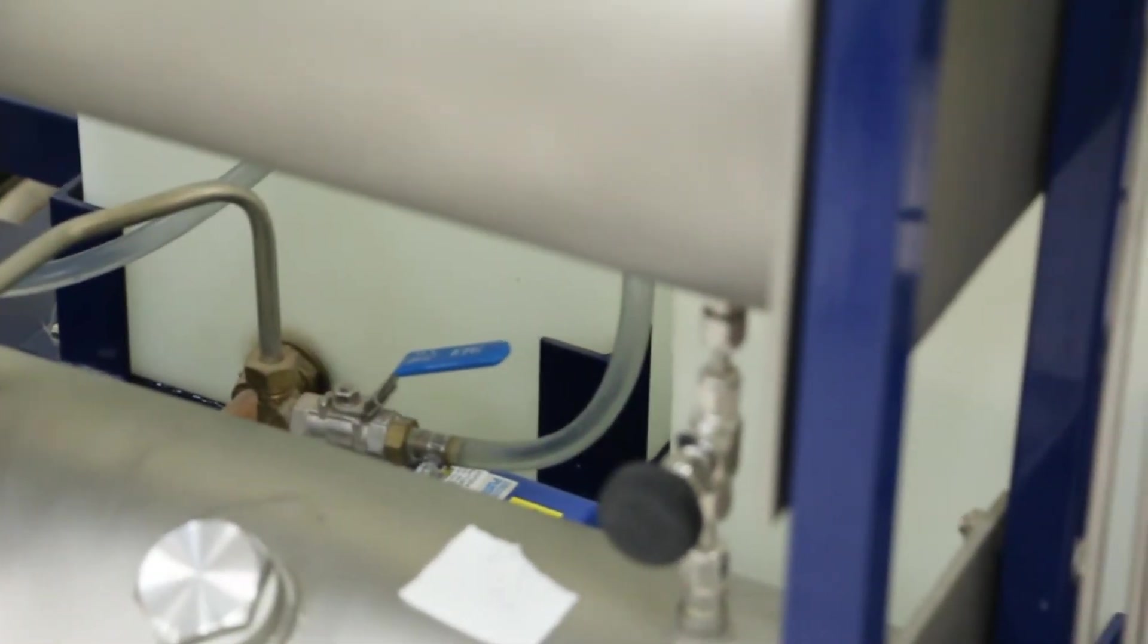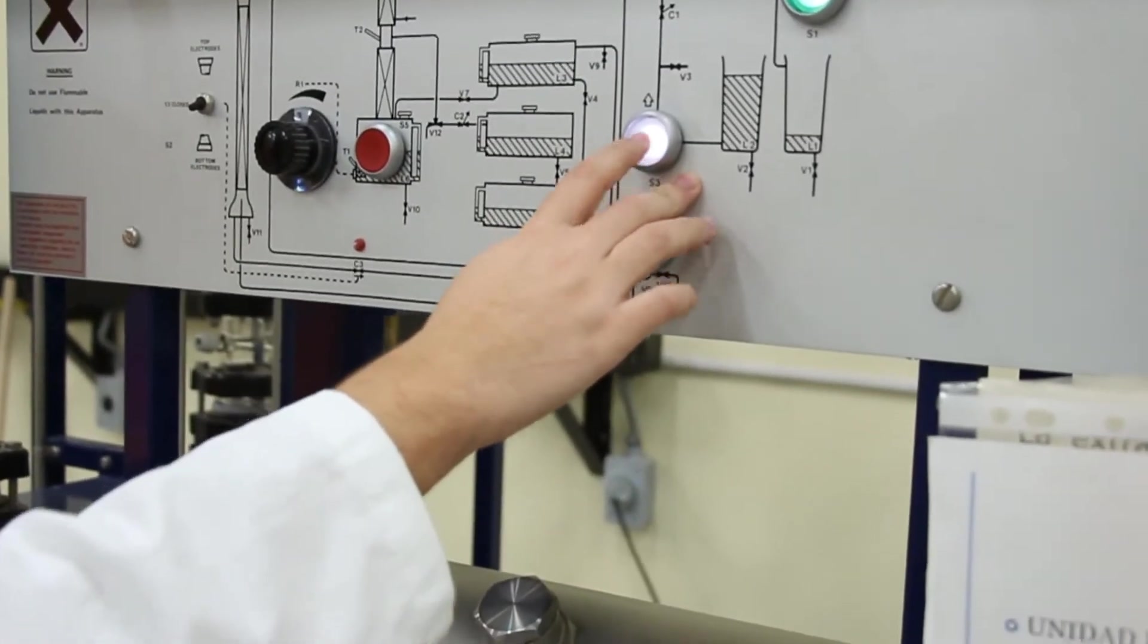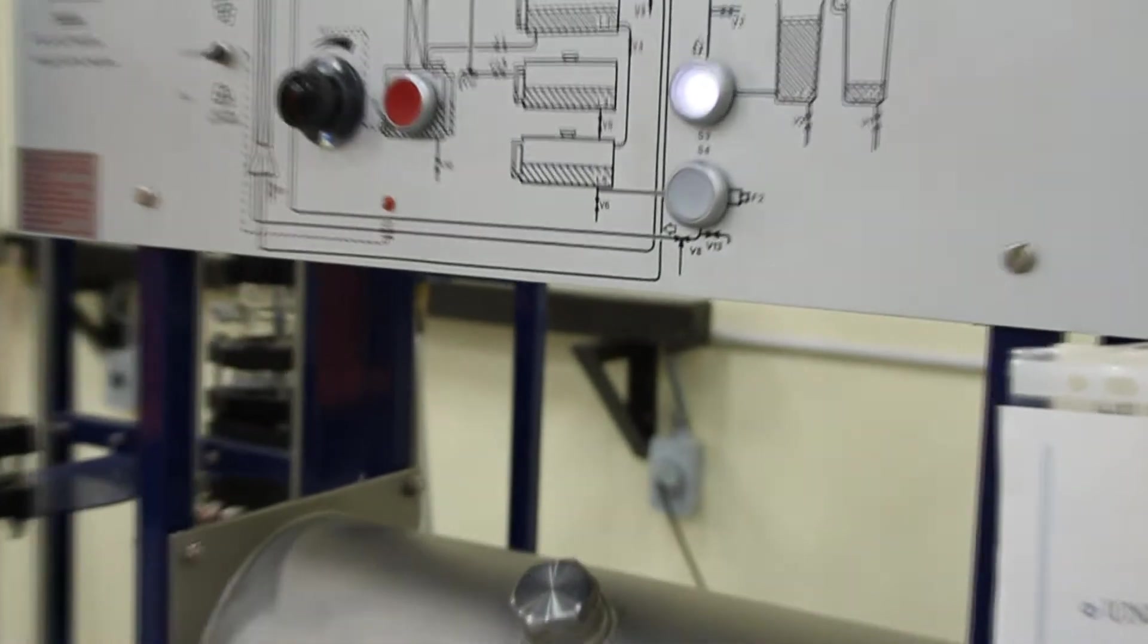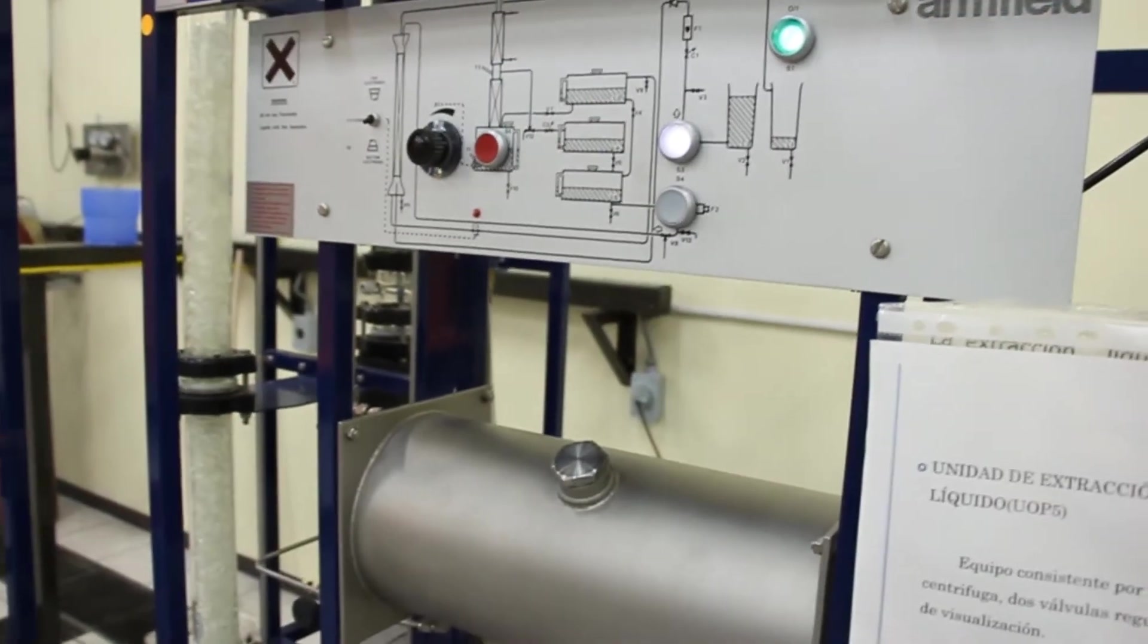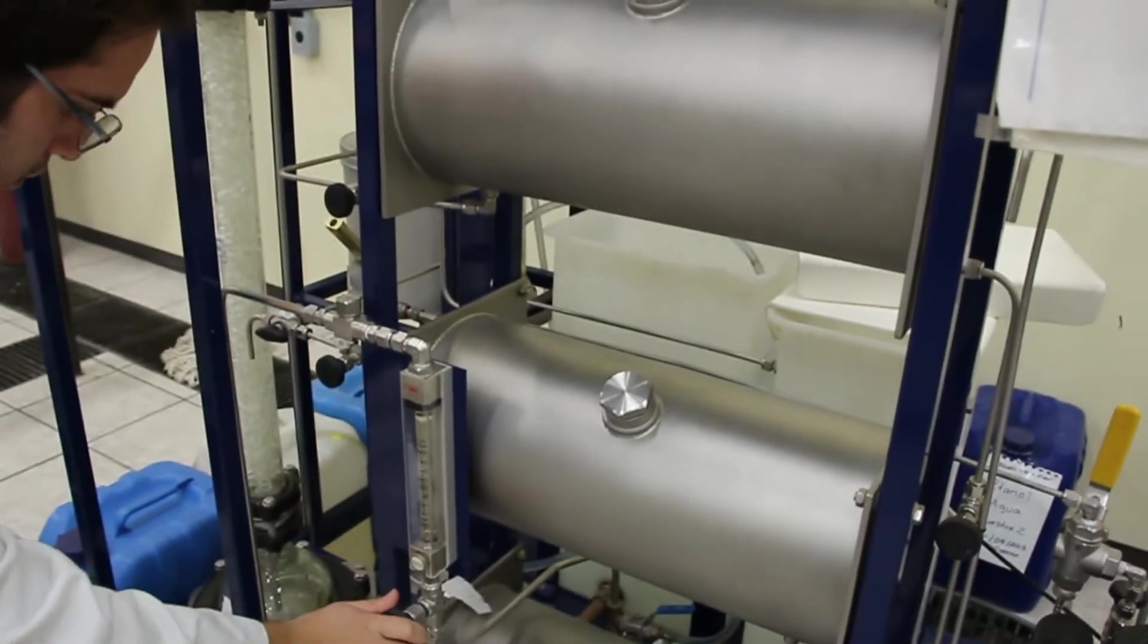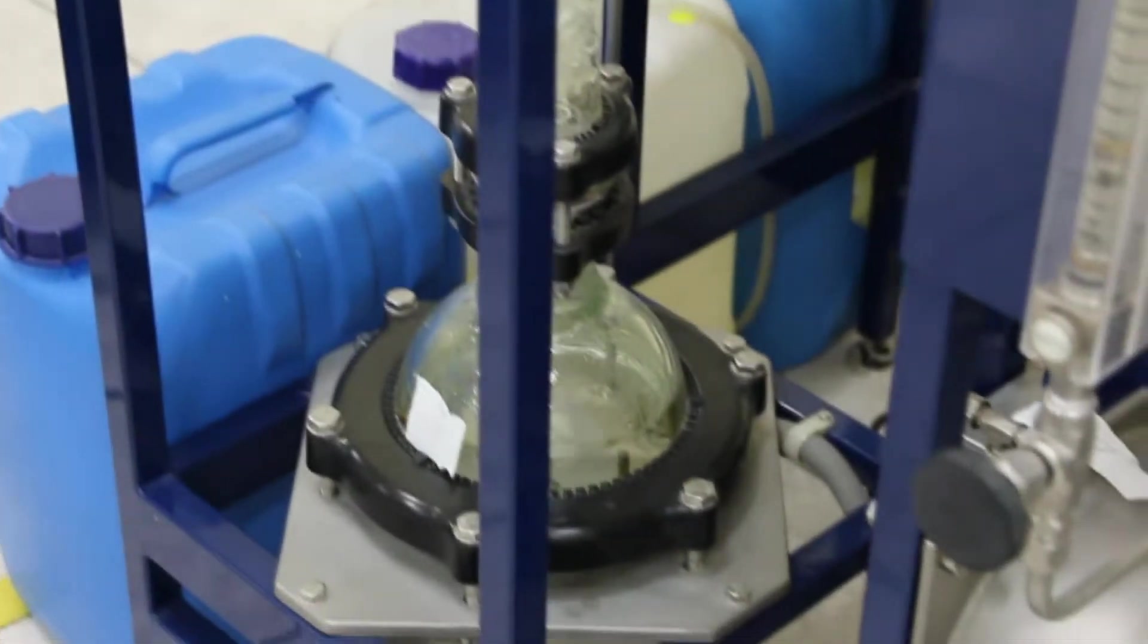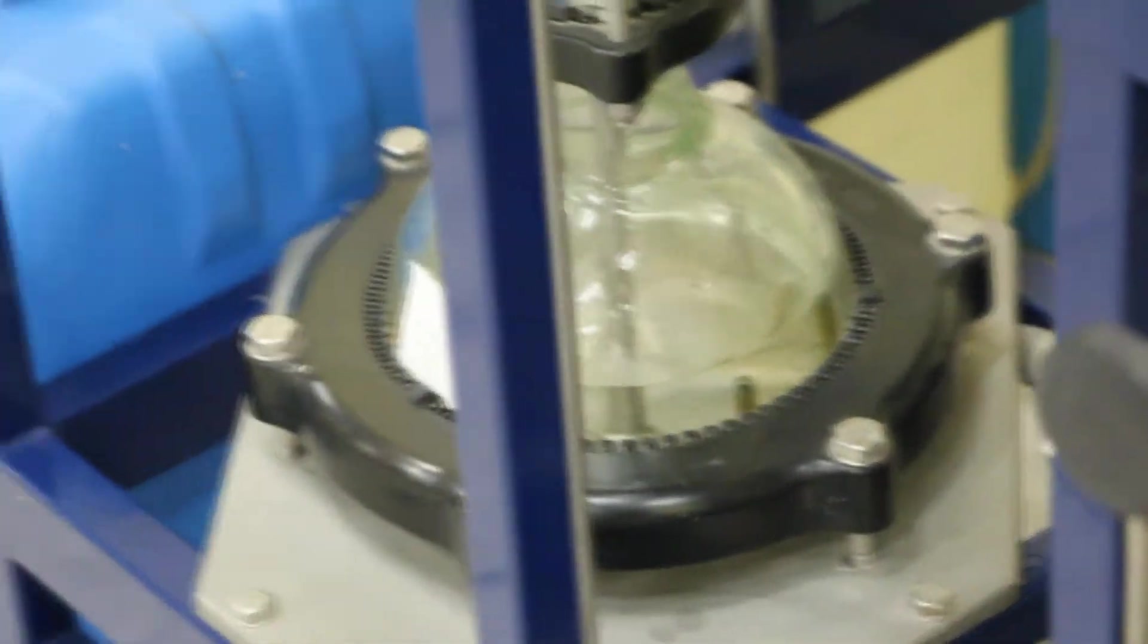Open vent valve V3, then switch on water pump. Allow water pump to prime, then close vent valve V3. Open control valve C1. Check flow of water on flow meter F1. Check water is delivered to injector at base of extraction column.